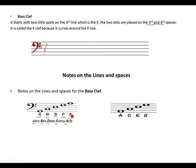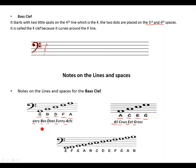Now looking at the spaces for the bass clef: the first space is A, second space is C, third space is E, and the fourth space is G. Let's look at lines and spaces combined: E on the line, F space, G line, A space, B line, C space, D line, E space, F line, G space, A line, and lastly B in the space.